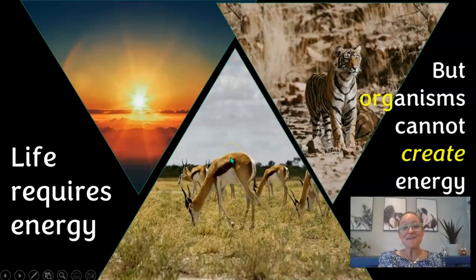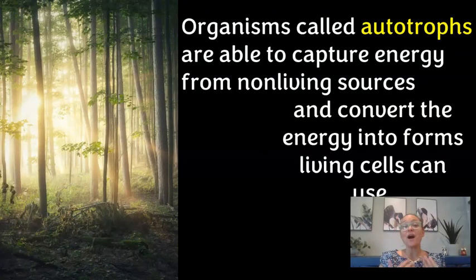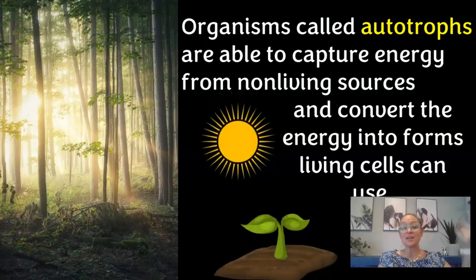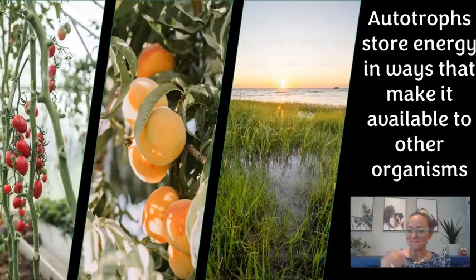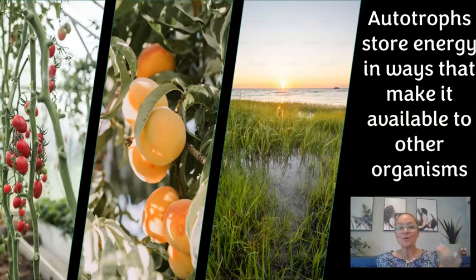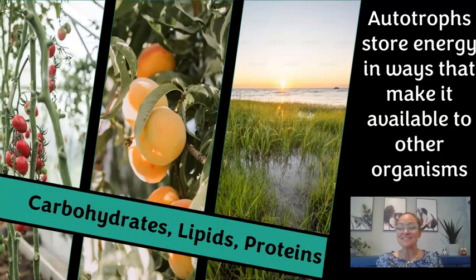Life on Earth requires energy, however organisms cannot create energy. Luckily we have organisms called autotrophs, which are able to capture energy from non-living sources and convert it into a form that cells can use. The most common autotrophs are plants that carry out photosynthesis, taking in solar energy along with carbon dioxide and water — capturing C, H, and O from the environment.